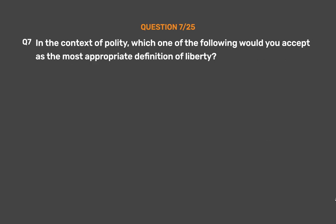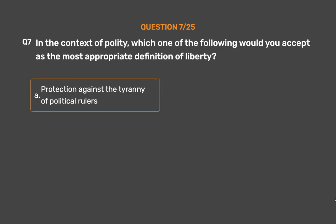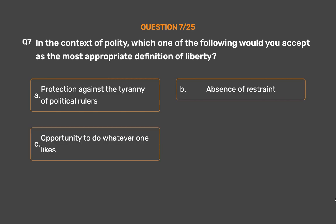Question No. 7: In the context of polity, which one of the following would you accept as the most appropriate definition of liberty? Option A: Protection against the tyranny of political rulers. Option B: Absence of restraint. Option C: Opportunity to do whatever one likes. Option D: Opportunity to develop oneself fully.